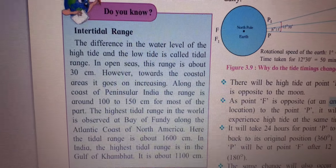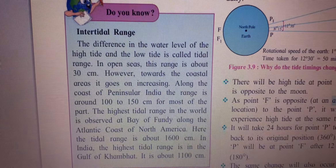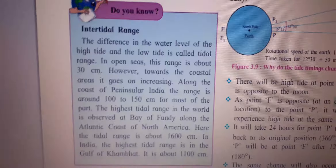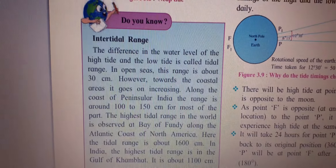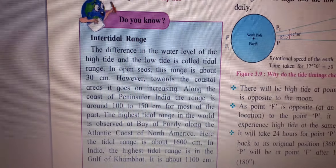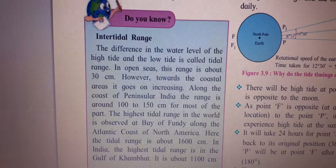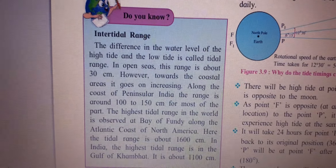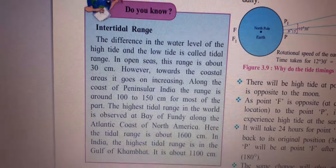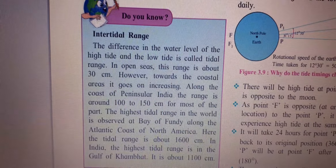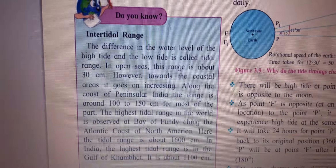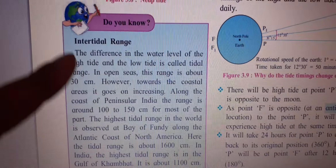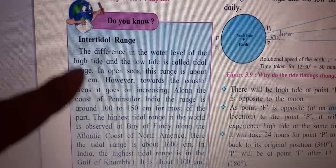If someone asks about intertidal range, the difference in water level of high tide and low tide is called tidal range. In open seas, the tidal range is about 30 cm. From here till here, the answer will be like that.